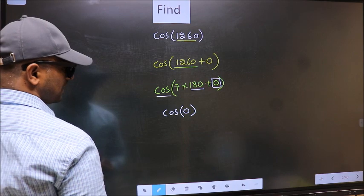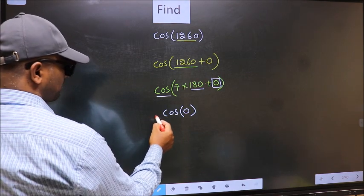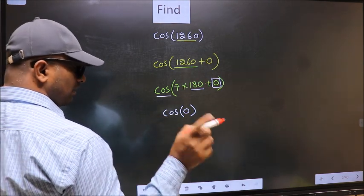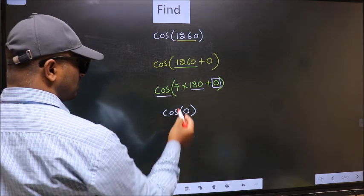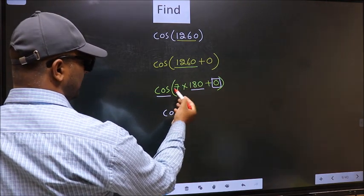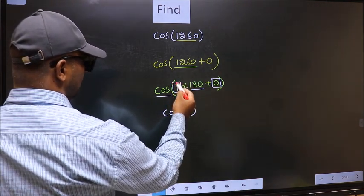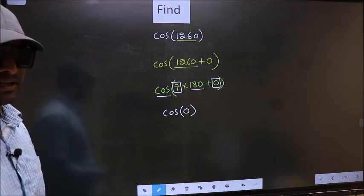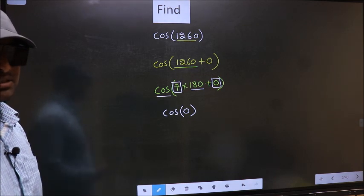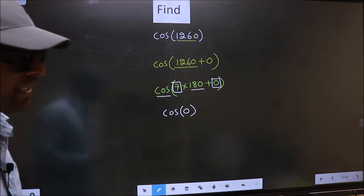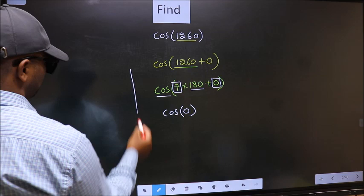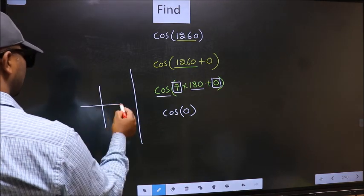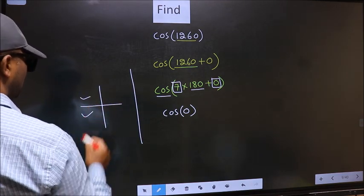Now the question is, will we get here plus or minus? To answer that, we should look at the number before 180, that is 7. And 7 is odd. And all the odd multiples of 180 lie in either the second or the third quadrant.